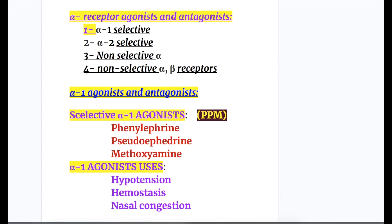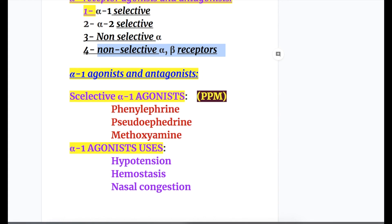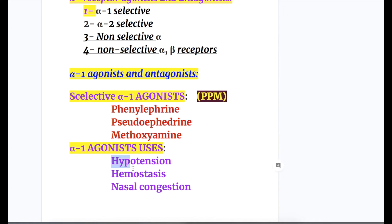Alpha receptor agonists may be alpha-1 selective, alpha-2 selective, non-selective alpha-1 and alpha-2, or non-selective alpha-beta. Selective alpha-1 agonists — mnemonic PPM (parts per million): phenylephrine, pseudoephedrine, and methoxamine. Alpha-1 agonists are used in hypotension, hemostasis, and nasal congestion.